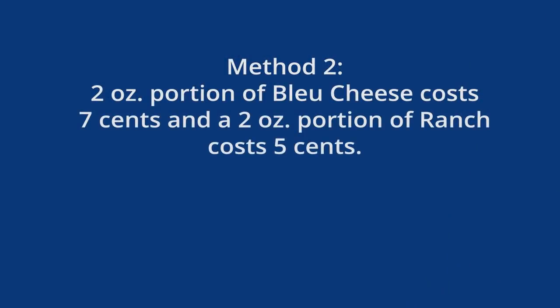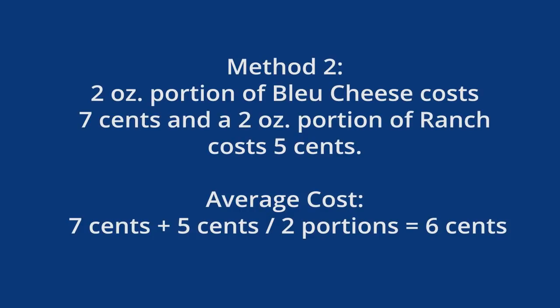The easier way: just average them out, unless it's dramatically different. If it's like 90-10 or even 75-25, then you probably just shouldn't even offer the second option. If someone asks for it, give it to them of course, but take it off the menu and don't even offer it. The only reason we would offer different choices is because it's pretty close, like 50-50 — and in that case, just average the cost of the two together. Let's say a two-ounce portion of blue cheese costs 7 cents and a two-ounce portion of ranch costs 5 cents. Just cost it out at 6 cents and you're done.